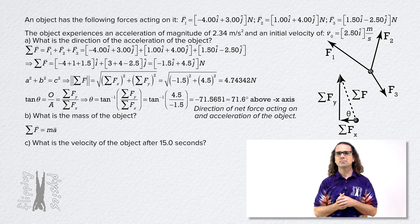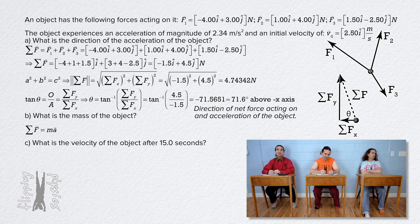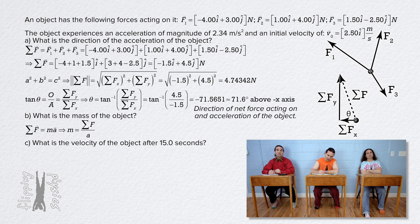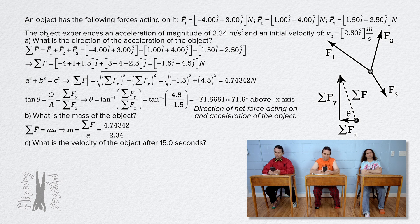Very nice, Bobby. We can also rearrange Newton's second law to solve for the mass of the object — it equals the net force divided by acceleration. We already have the magnitude of the net force, and the magnitude of the acceleration was given in the problem. So 4.74342 divided by 2.34 is 2.027101, or 2.03 kilograms with three significant digits.